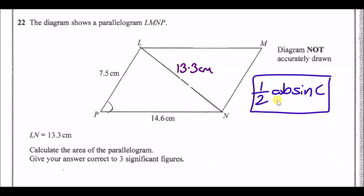Where a and b are two side lengths and angle C is the angle between them. Before using that formula, we need to find angle C. Since we have three lengths and one angle, we use the cosine rule. To use the sine rule you'd need two matching pairs of angle and length, which we don't have here.